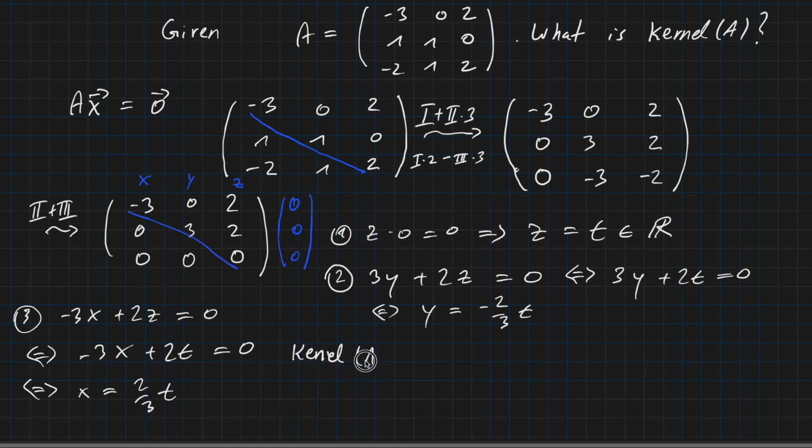Kernel A equals: the first coordinate is two over three times t, the second one is minus two over three times t, the third coordinate is just t. So this doesn't look so beautiful right now, but we can make it much more simple. So t is a real number. So this is describing our kernel. We are already done here. But we can even further simplify this.